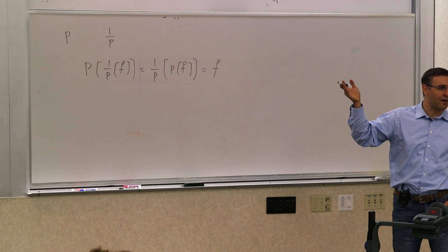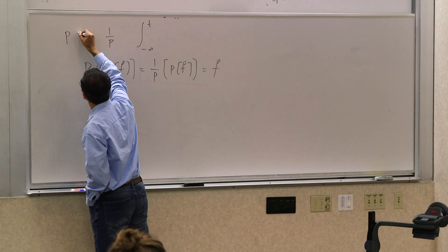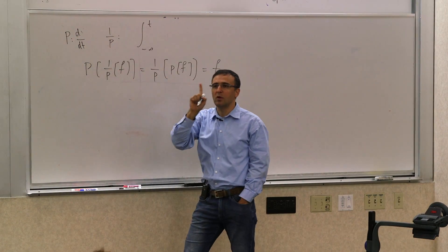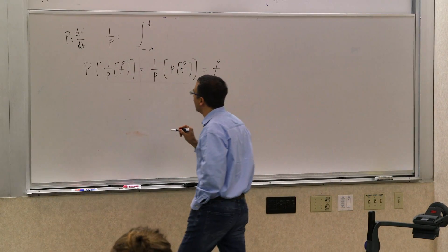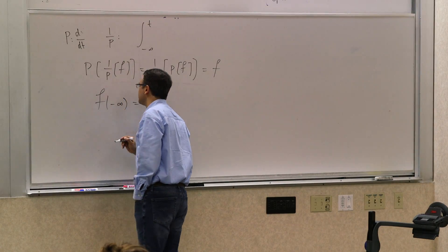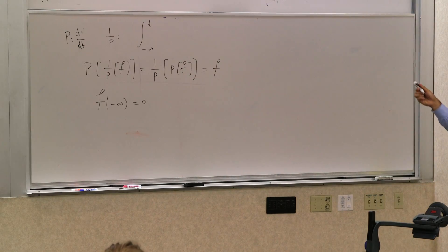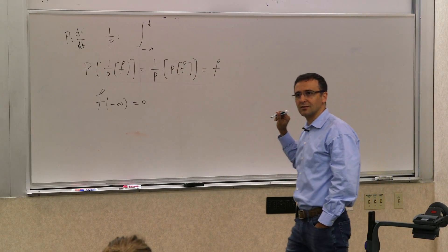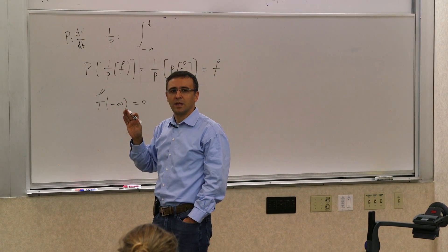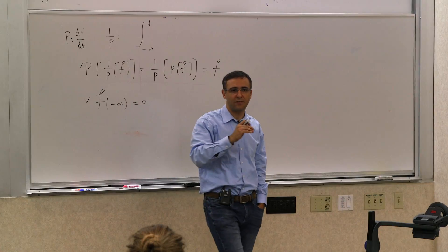We show that p being the differentiation and 1 over p being the integration from negative infinity to t, indeed do satisfy this with one condition. F of negative infinity should be zero. Because of the limitation of integration, that constant of integration, et cetera. The limits of integration. So if you have this condition, then this is true. We can easily verify that.